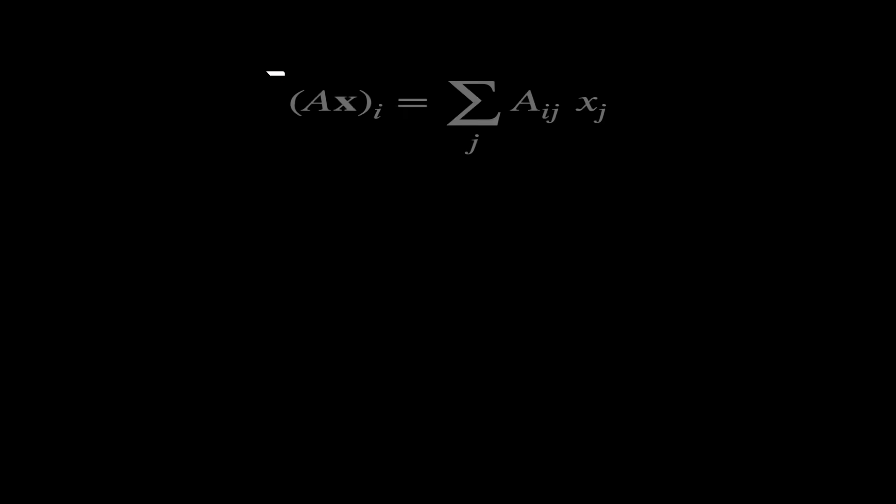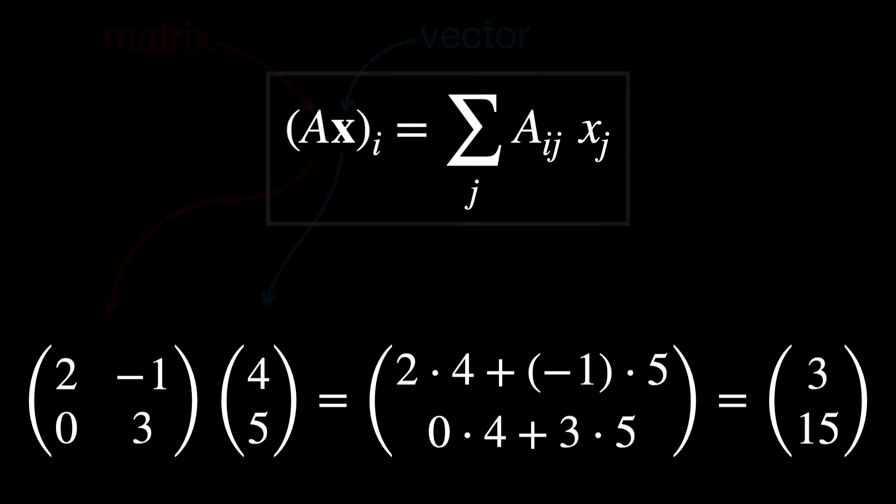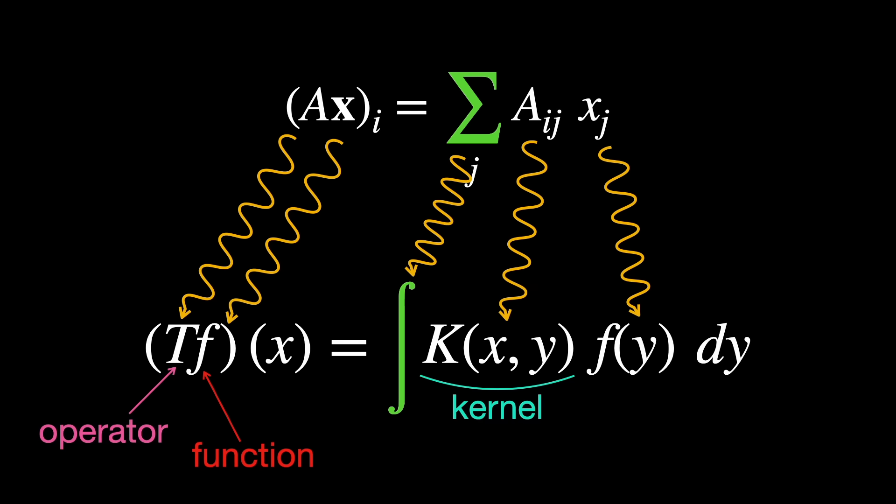In linear algebra, a matrix can act on a vector via a sum. In functional analysis, an operator can act on a function via an integral, instead of a sum, because now we're summing up a continuous set of numbers.